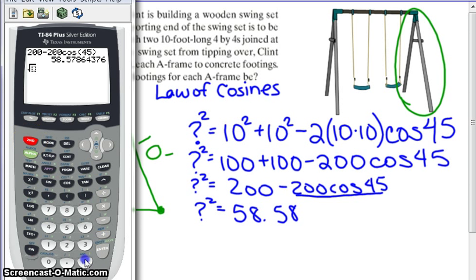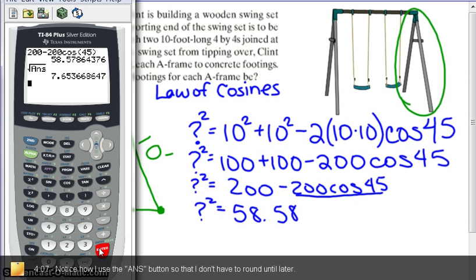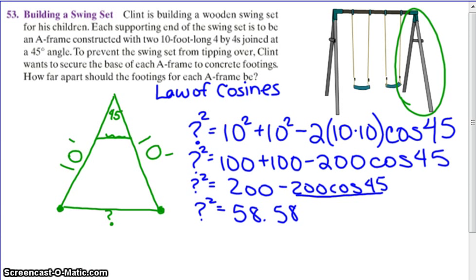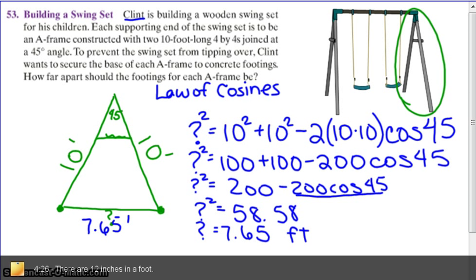And I've got to take that and square root that. So square root my answer. And I have 7 point, we'll call that 7.65. So that question mark is about 7.65 feet long. That would be this one, 7.65 feet long. If you want to get real fussy, you could help out our buddy Clint.